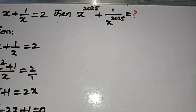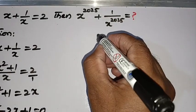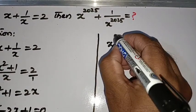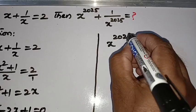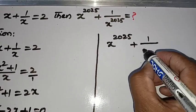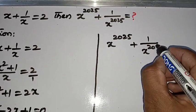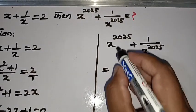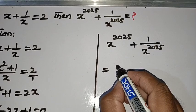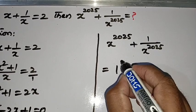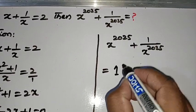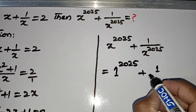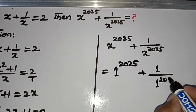Now what is required to find? We are asked to find x to the power of 2025 plus 1 by x to the power of 2025. Now it is really easy to find because we got x equals 1. So we substitute the value of x is equal to 1, giving us 1 to the power of 2025 plus 1 divided by 1 to the power of 2025.